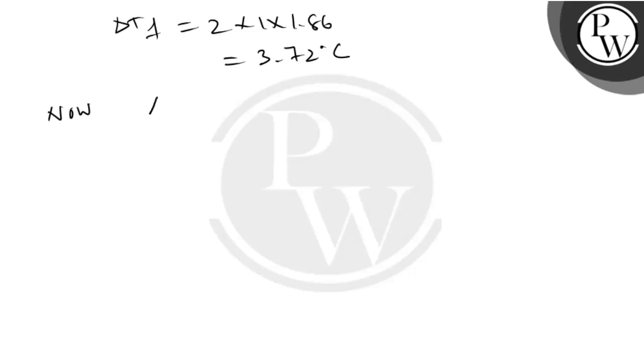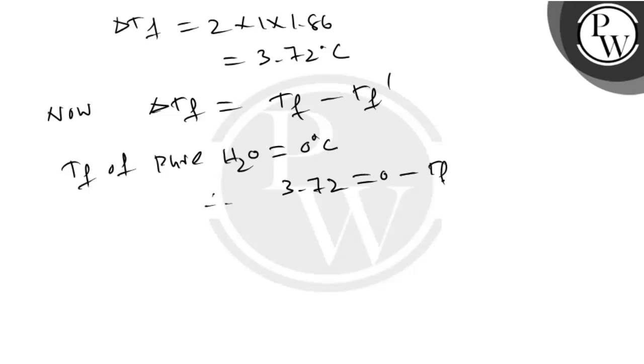Now, delta Tf is equal to Tf minus Tf dash. Tf of pure H2O is equal to 0 degree Celsius. Therefore, 3.72 degree Celsius, therefore Tf dash is equal to minus 3.72 degree Celsius.